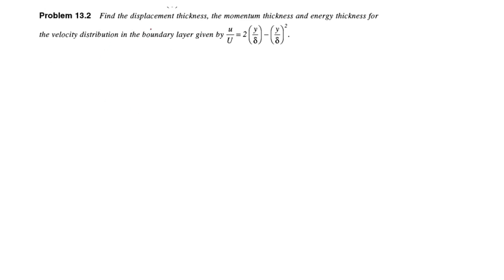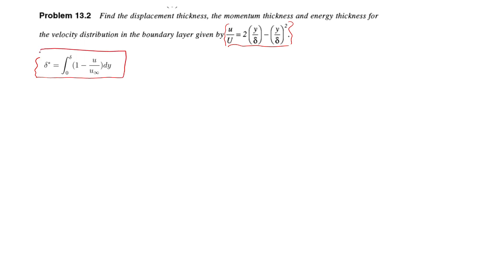So to summarize: displacement thickness, momentum thickness, and energy thickness. We need to find all three for the velocity distribution in the boundary layer given by the provided equation. The displacement thickness formula is delta star equals the integral from 0 to delta of (1 minus u over u-infinity) dy.